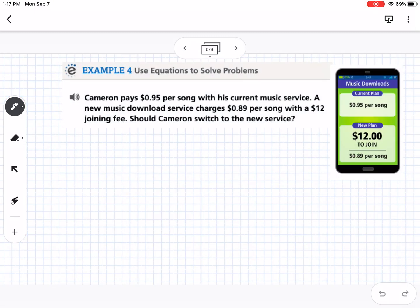So the last one we're going to do here is a word problem. So it says, Cameron pays 95 cents per song with his current music service. A new music download service charges 89 cents per song with a $12 joining fee. Should Cameron switch to the new service?